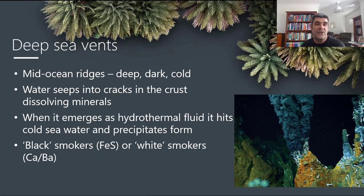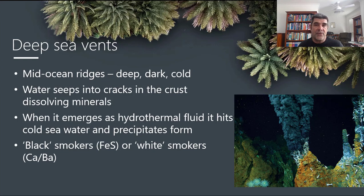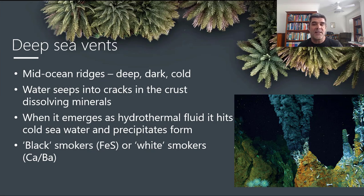The first thing we need to do is look at deep sea vents. Deep sea vents are places particularly associated with mid-ocean ridges, where we have two divergent boundaries and a constructive boundary happening, so new crust is being formed. Material is heated from below the surface and rises up. One important thing to be aware of is that in the deep sea vents, it's very deep, very dark, and very cold.